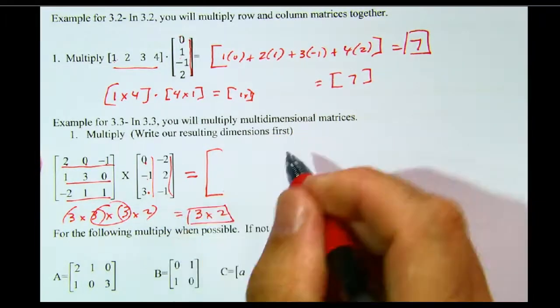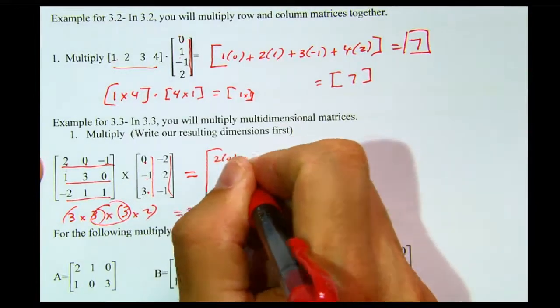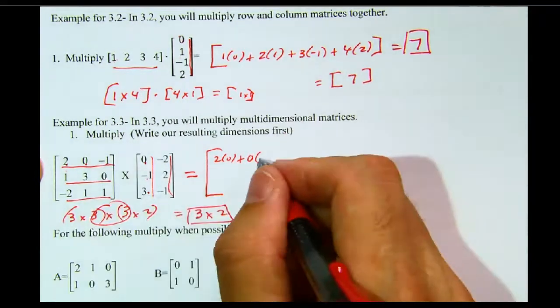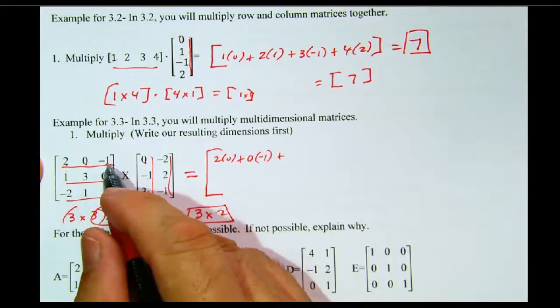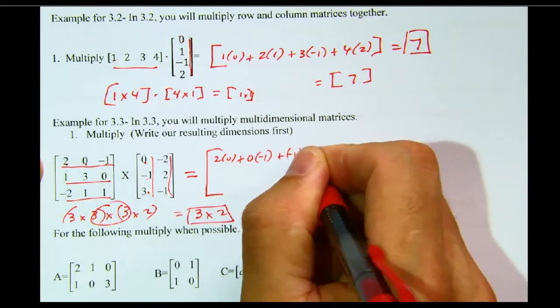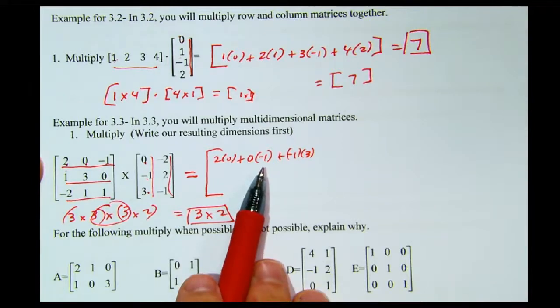So this is how we go. 2 times 0. And I'm going to write this out pretty thoroughly right now because it's your first time. 0 times negative 1. And then I'm going to go negative 1 times 3. That gives me the first number in the first row and first column.